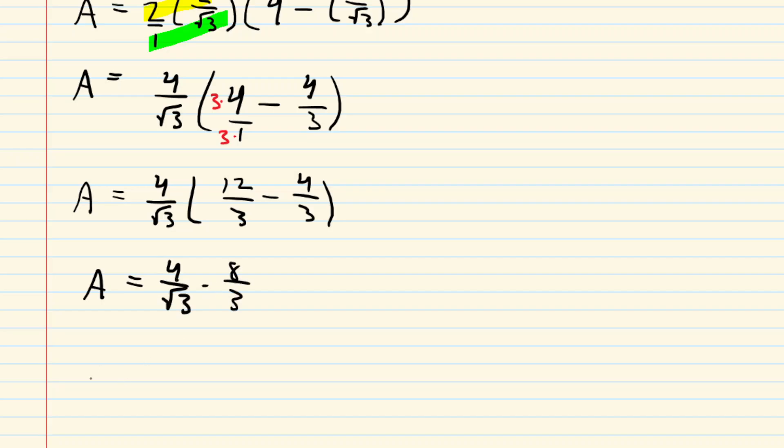And then finally, multiplying our numerators, we get 32. Our denominators multiplied gives us 3 root 3. So this is the maximum area of that rectangle. If you put that into your calculator, you'll get an approximate value of 6.16. So that would be an approximate answer as well.